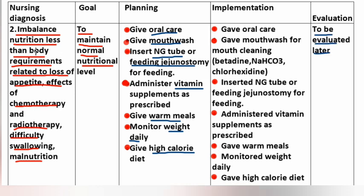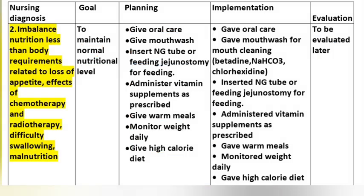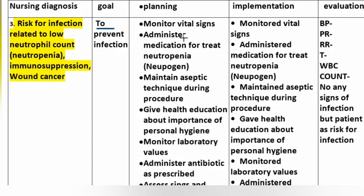Nursing diagnosis number 3 - Risk for infection related to low neutrophil count, immunosuppression, and wound from cancer. Goal: to prevent infection. Planning: monitor vital signs. Administer medication to treat neutropenia.